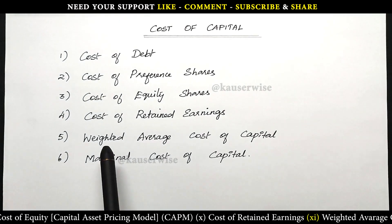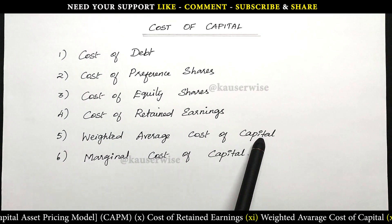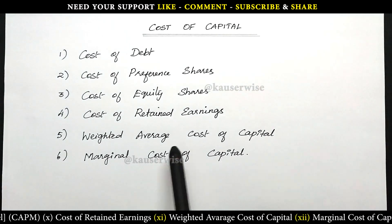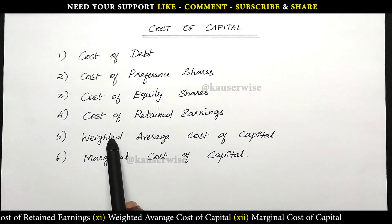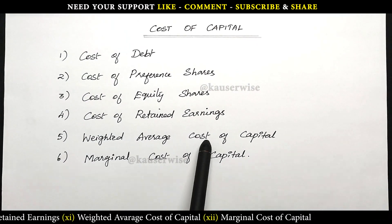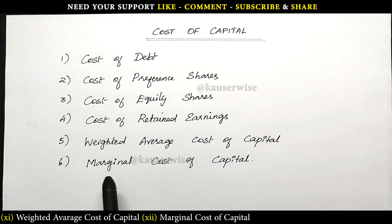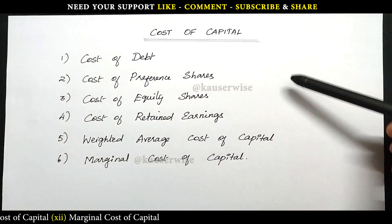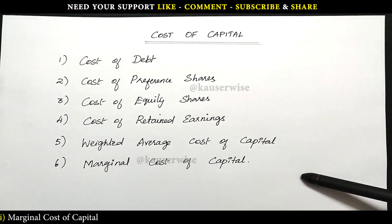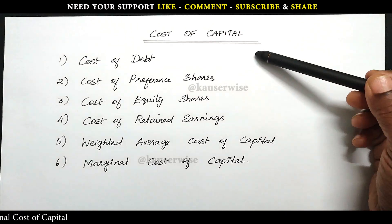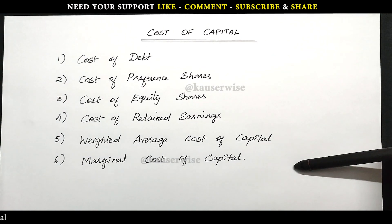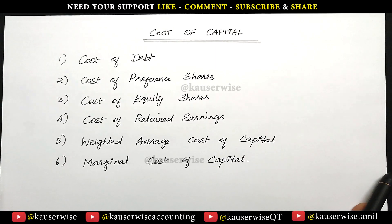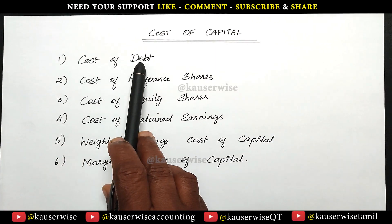The next concept is weighted average cost of capital. After finding the four different components, you can find out the weighted average cost of capital. And the last one is marginal cost of capital. These are the various components we are going to discuss one by one along with the numerical problem. In this video, we are going to see the first one — that is cost of debt.